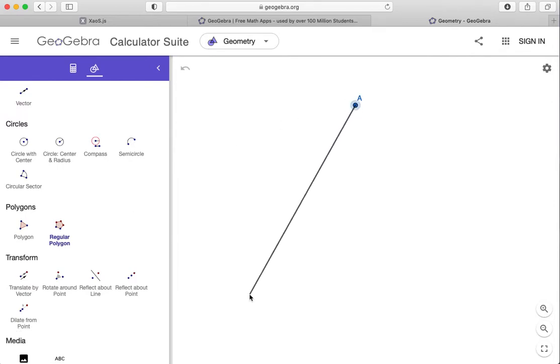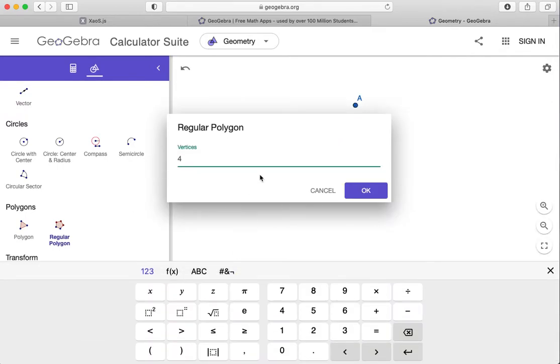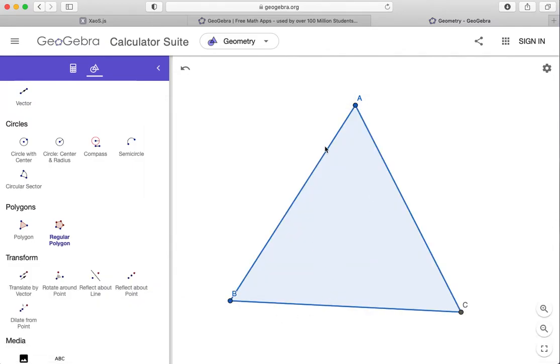Now you're going to click two points, one, two, and then I'm going to tell it that I want my polygon to have three sides, and now it's built me an equilateral triangle.